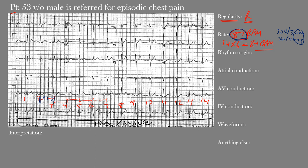For rhythm origin: we have narrow QRS complexes, indicating some sort of supraventricular rhythm — meaning it's coming from above the ventricles. We can also make out clear, similarly-shaped P waves. For sinus rhythm, we look at the inferior leads — leads II, III, and AVF — where we see upright P waves. In the left lateral leads V4, V5, and V6, we also see upright P waves.